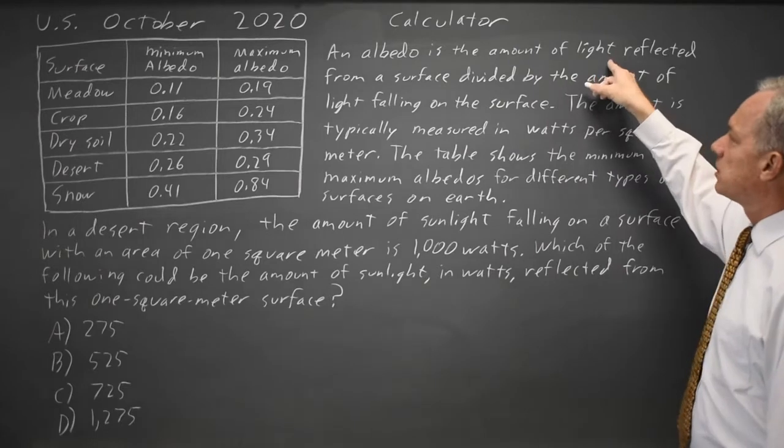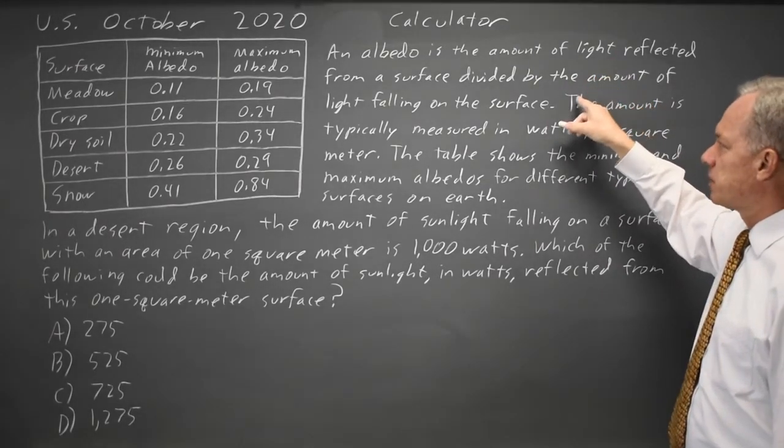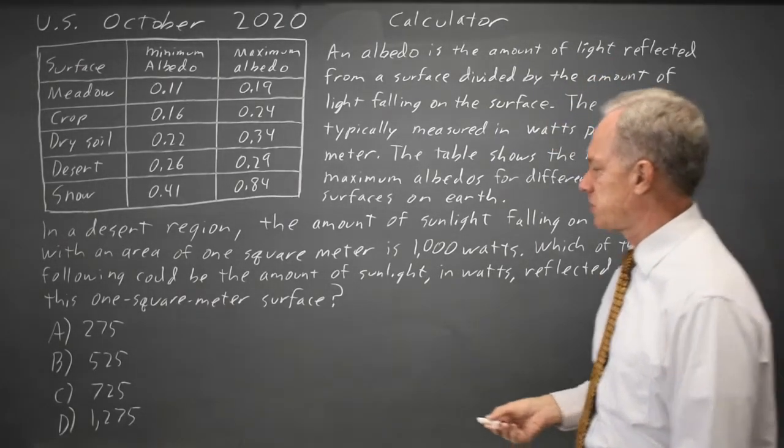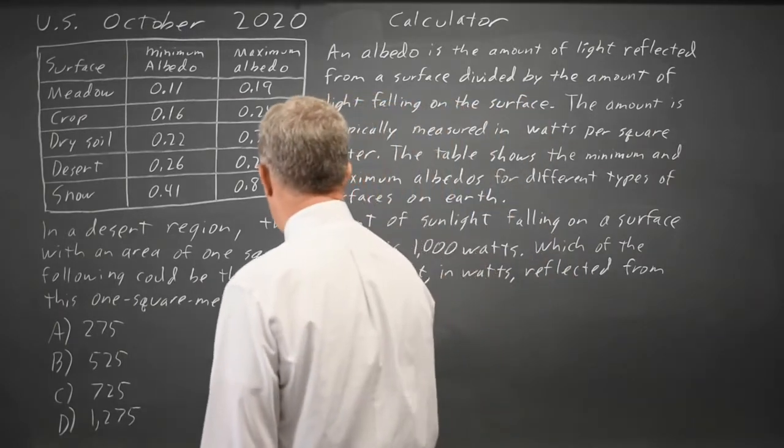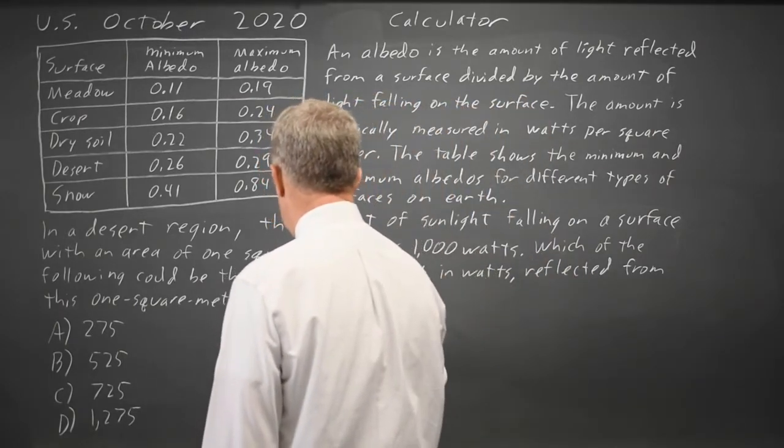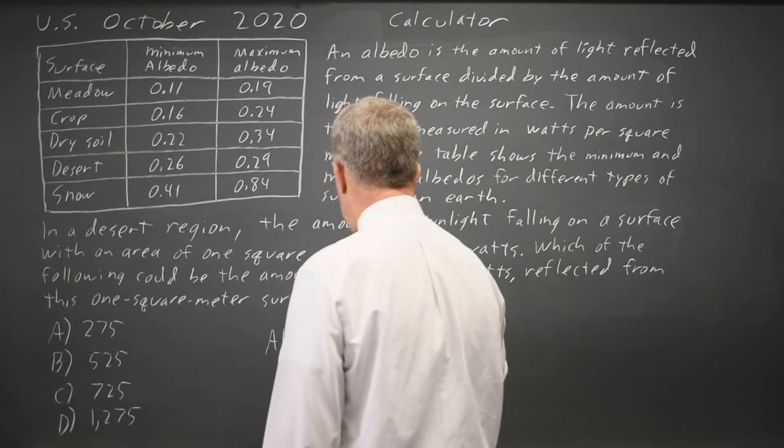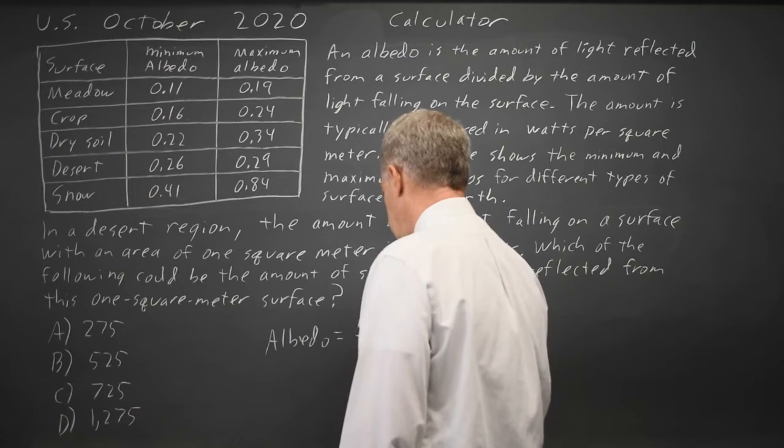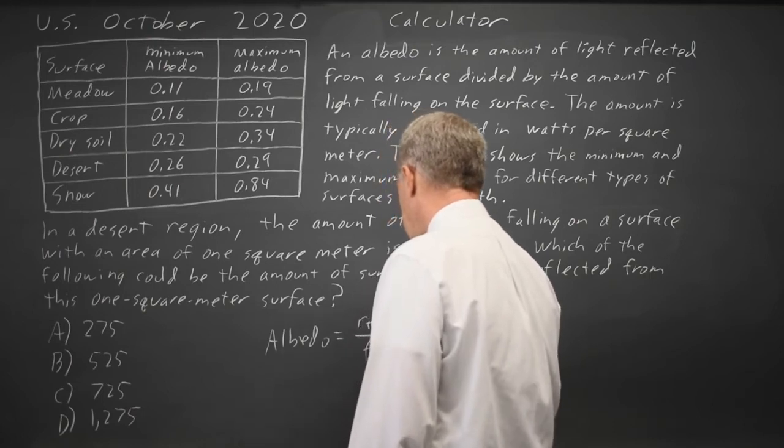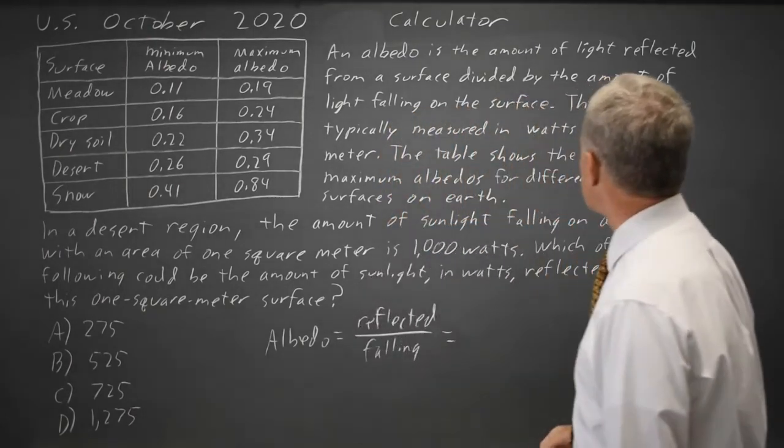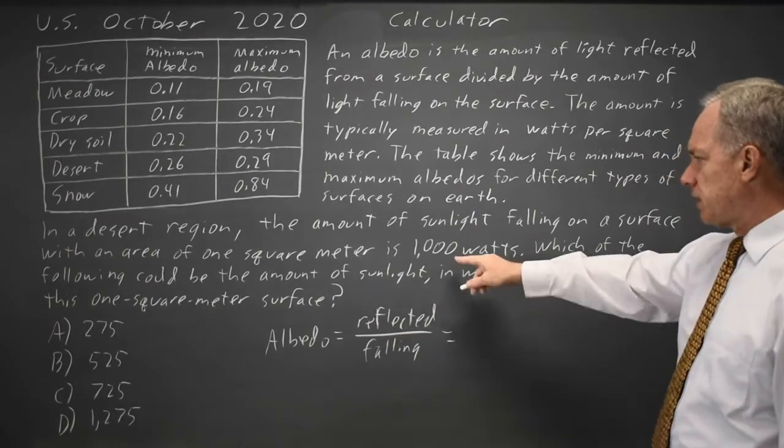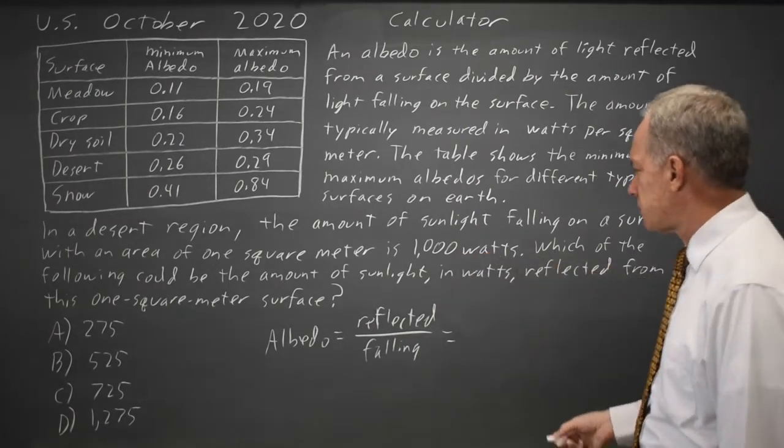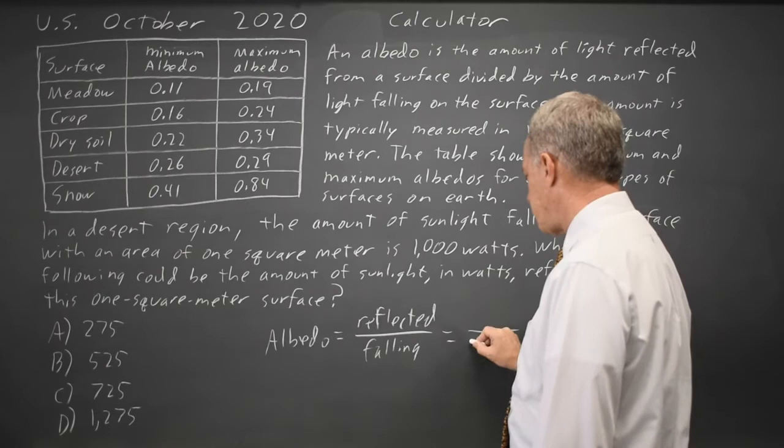It's the amount of light reflected from a surface divided by the amount of light falling on the surface. So albedo equals reflected over falling, and we're told in this case the amount of light falling on the surface is 1,000 watts, so it's reflected over 1,000.